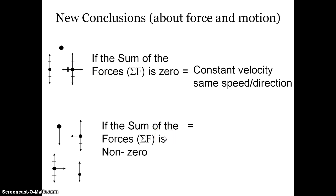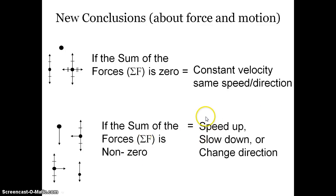We can also say that when the sum of the forces is not equal to zero, something will speed up, slow down, or change direction. If the sum of the forces points in the same direction the object is moving, it speeds up. For something to slow down, when you add up all the forces, the sum must point in the opposite direction of motion. And if the sum of the forces points perpendicular to the object's direction of motion, the object changes direction.